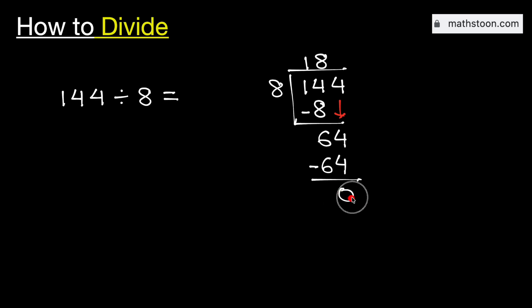As we have got the number 0 and there is no number to bring down here, so we will stop. Therefore, 144 divided by 8 is equal to 18. And this is our final answer.